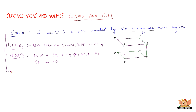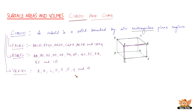Now let us go to the next term called vertex. For any two edges, say AB and DA, that meet at an endpoint A, there is a third edge AE which also meets them at that point. This point of intersection of three edges of a cuboid is called a vertex of the cuboid. Clearly a cuboid has eight vertices: A, B, C, D and E, F, G, H.